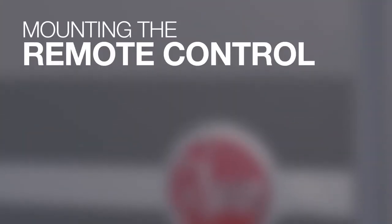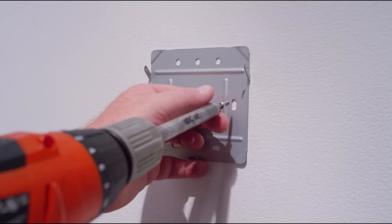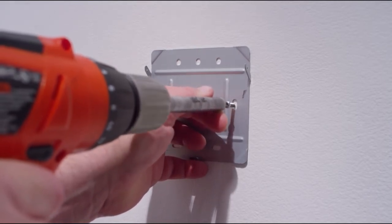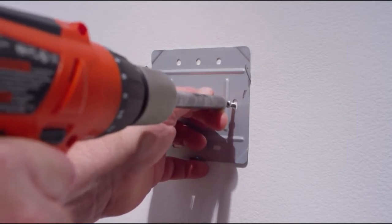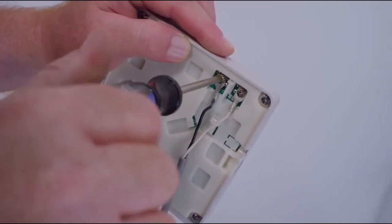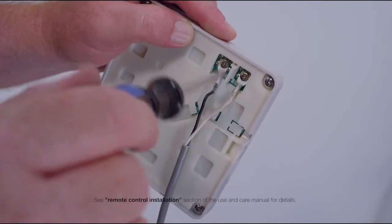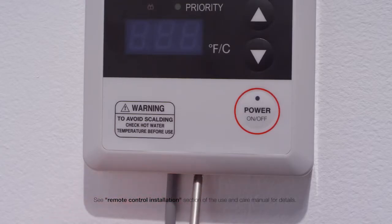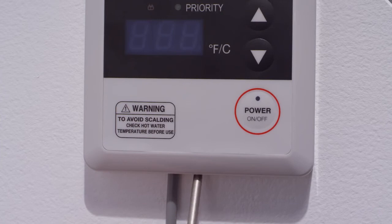Mount the remote control. Select an easily accessible location for the remote control which has a 10 foot cord. Secure the remote wall plate using the screws provided. Then connect the remote control wire provided to the two screw terminals on the back of the remote. Secure the remote to the mounting plate using the small screw located at the bottom.